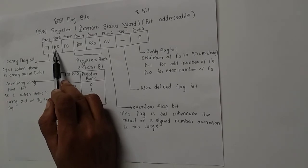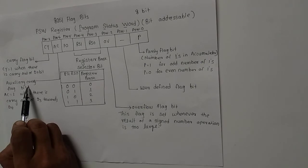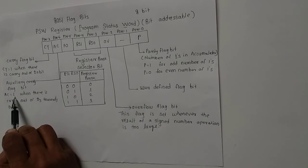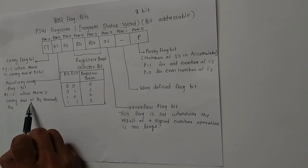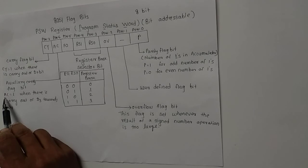When AC is equal to 1, that means there is a carry generated due to nibble addition or subtraction. So whenever there is a carry out of D3 towards D4, we set the AC flag bit as 1, otherwise it is 0.